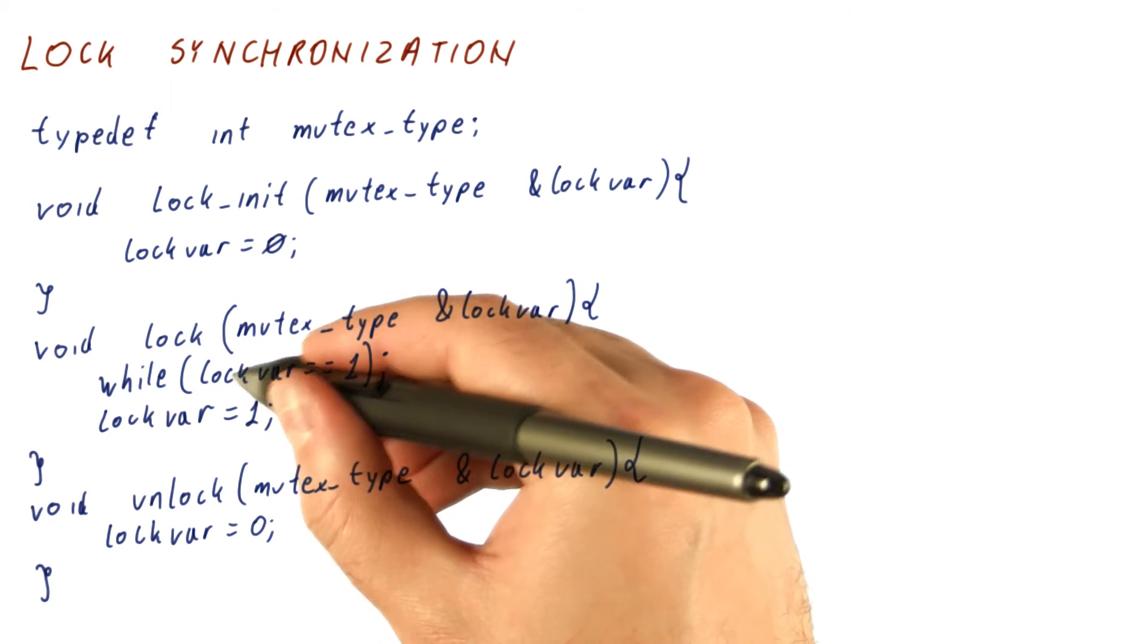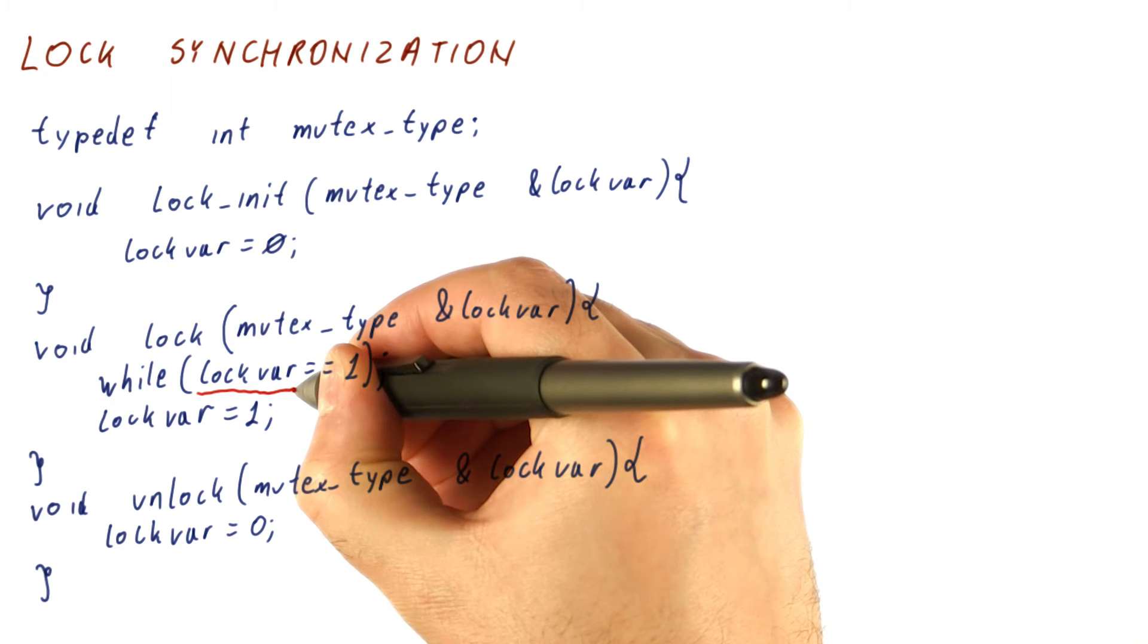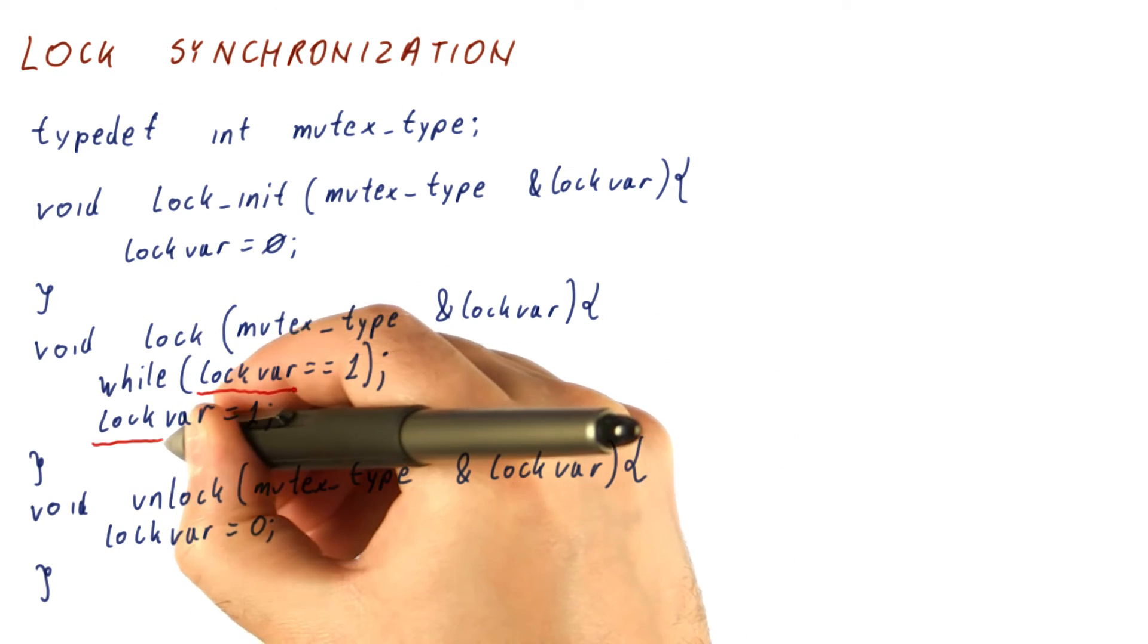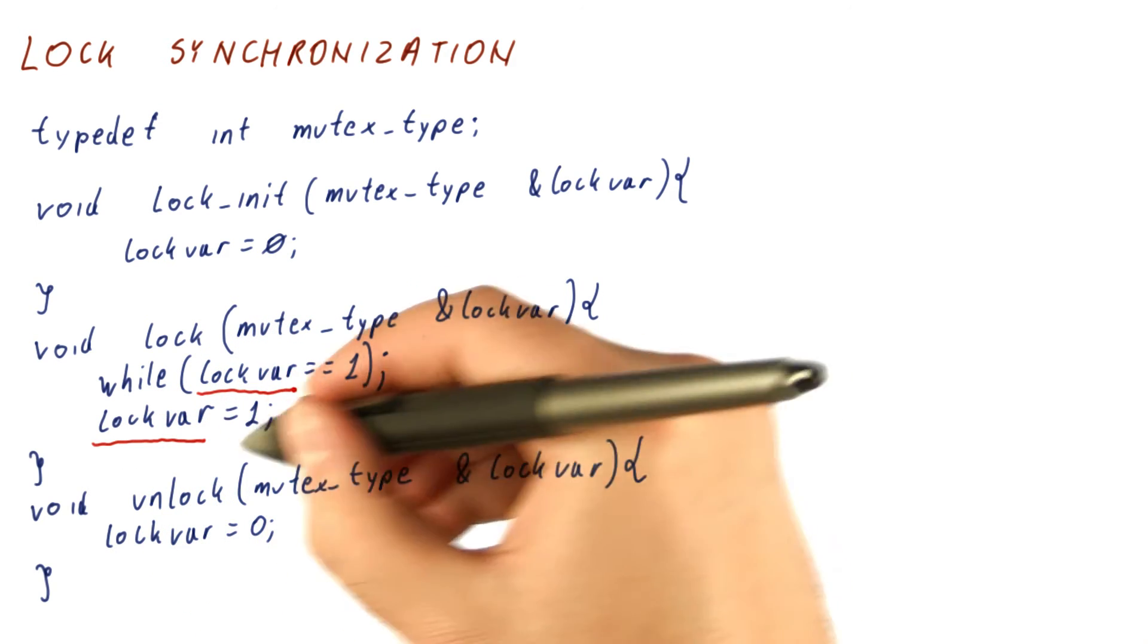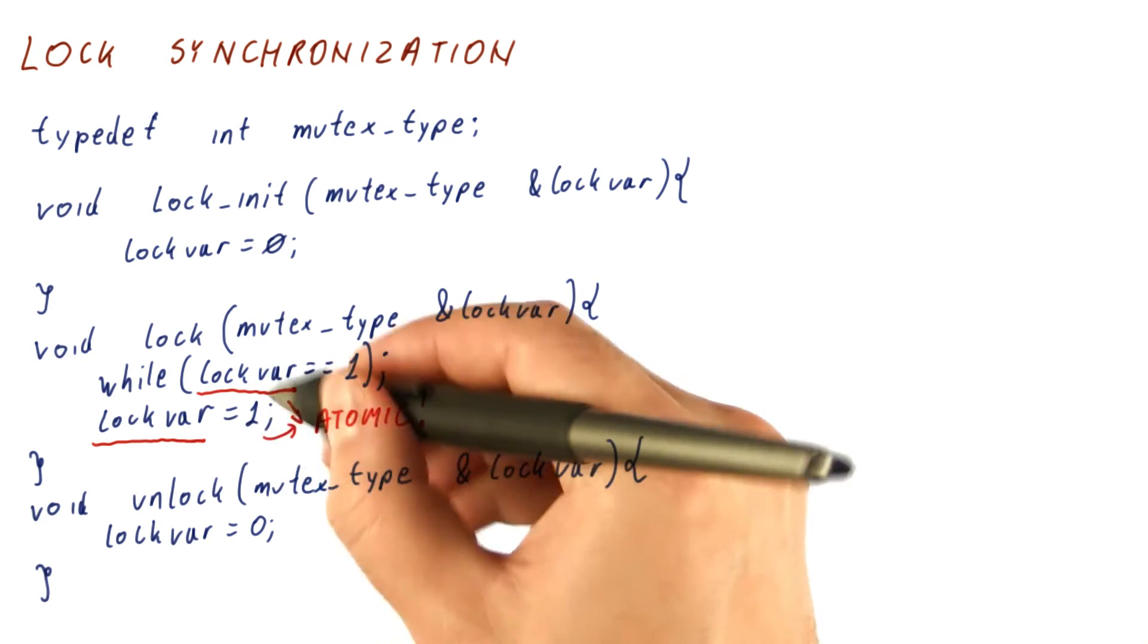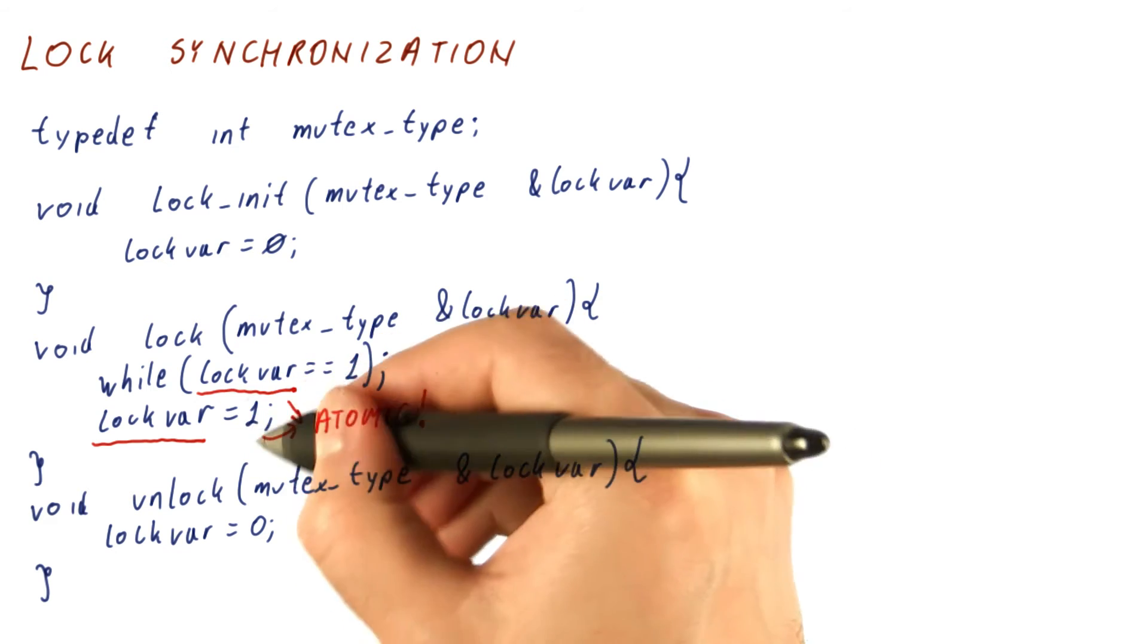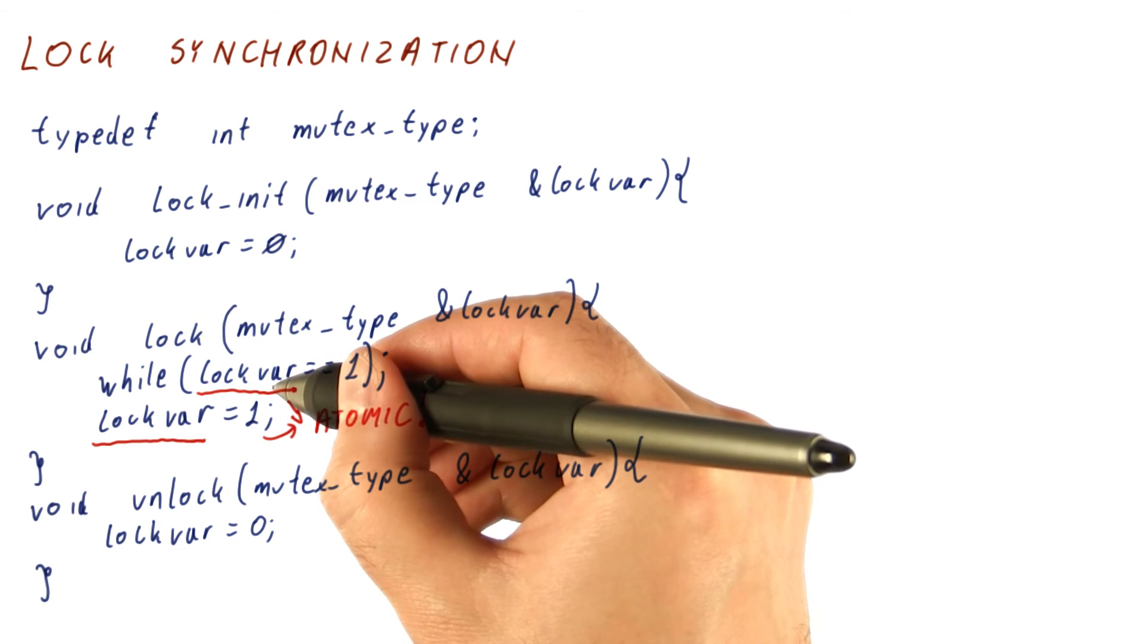What we really need to correctly implement the lock function is that the looking at lock var and seeing zero, and the writing to lock var of one, needs to be atomic. Which means we really need to do this in a critical section of its own, to make sure that when we see a zero, we end up writing one before anybody else gets to see a zero.